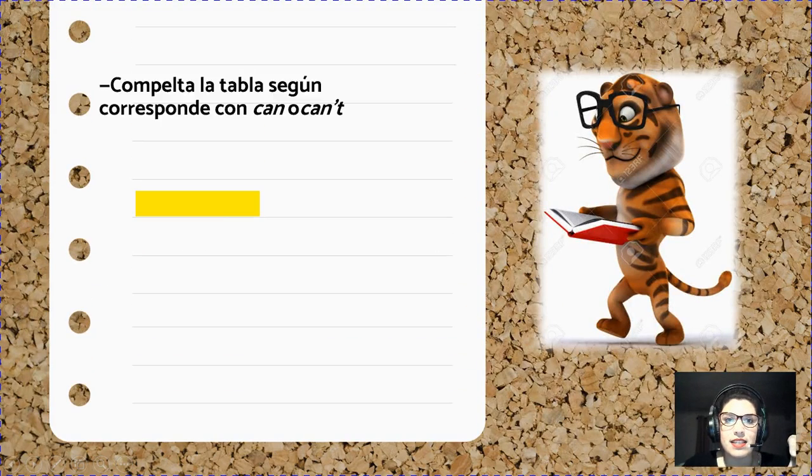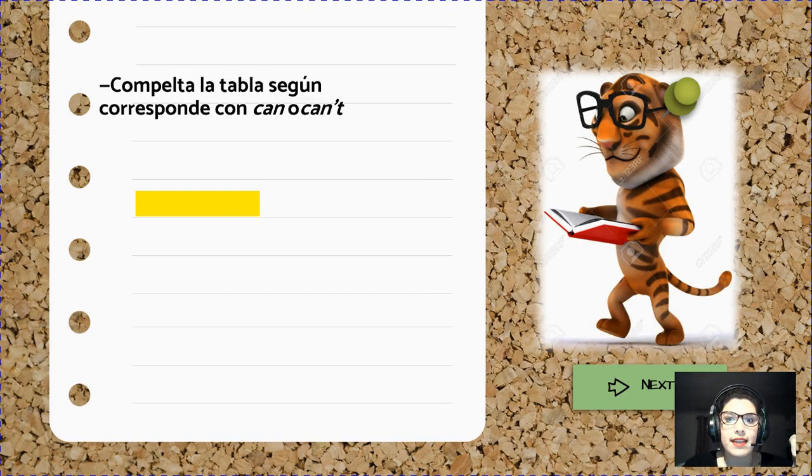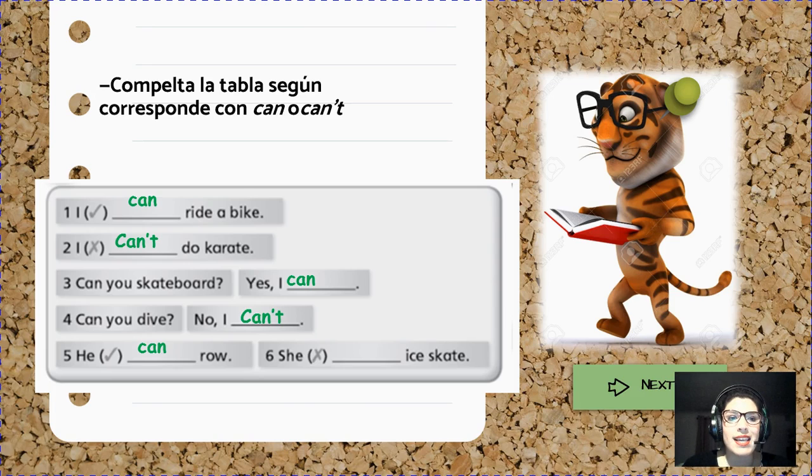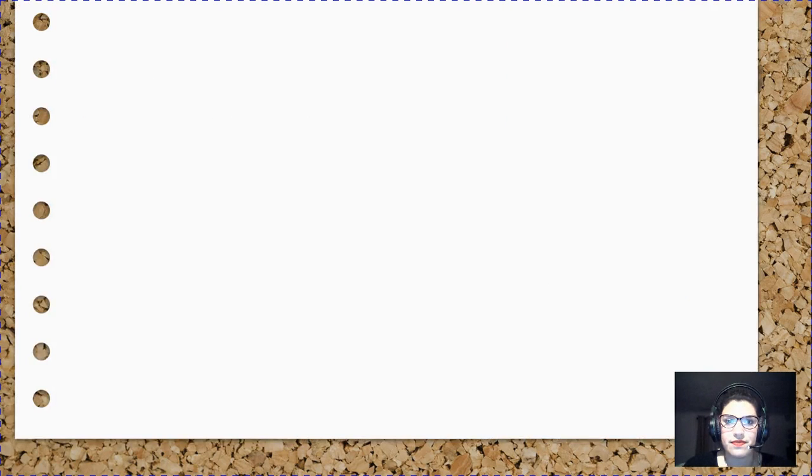And in the second activity you have to complete the table with can or can't. So we have: I can ride a bike, I can't do karate. Can you skateboard? Yes I can. Can you dive? No I can't. He can roll. She can't ice skate. There we go.